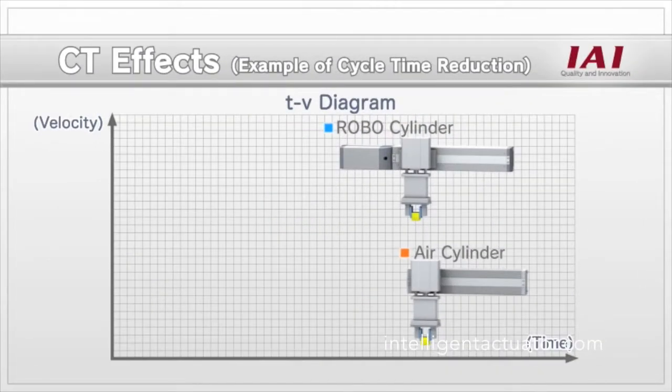The cycle time is shorter because the ROBO cylinder is faster than the air cylinder. The speed difference between the two is explained using this t-v diagram.